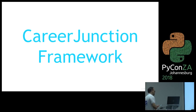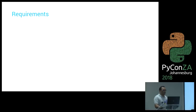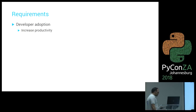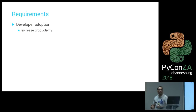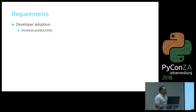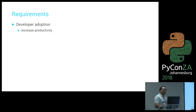Let's have a look at the Career Junction framework. The first requirement was to make development easier and ensure developer adoption — it's no use building something nobody's going to use. It had to be very familiar to developers, something they could just pick up without needing to learn something new, ultimately increasing productivity.